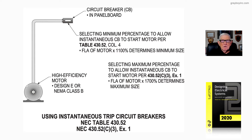Notice that's what the second call-out shows — Exception 3 to 430.52(C)(1), and Exception 1. It does allow you in certain cases to go up to 1700% where you have a high-efficiency NEMA B motor, or maybe a European Design E motor, that has a very high inrush current when starting and driving a load.